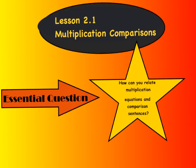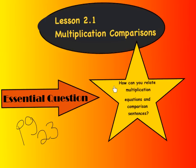Good evening boys and girls. Welcome to tonight's lesson, Lesson 2.1, Multiplication Comparisons. Tonight we are going to be working in our Go Math book on page 23. Please get out your Go Math book and turn to page 23. When you get there, I would like you to write down the essential question at the top of page 23 where it says name. Please remember boys and girls that you can pause and rewind this video at any time so that you can make sure that you're keeping up with us.